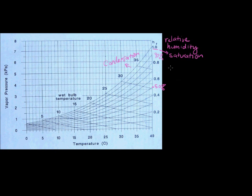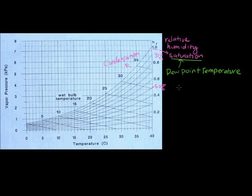So our next question is: how does relative humidity relate to dew point temperature? Remember, dew point temperature is basically related to the saturation curve. So if you're given a parcel of air, the dew point temperature is: if you decrease the temperature - if you take this parcel of air at a given relative humidity or vapor pressure concentration of water vapor, and you just cool it - at what point does it hit that saturation curve and then begin to condense?